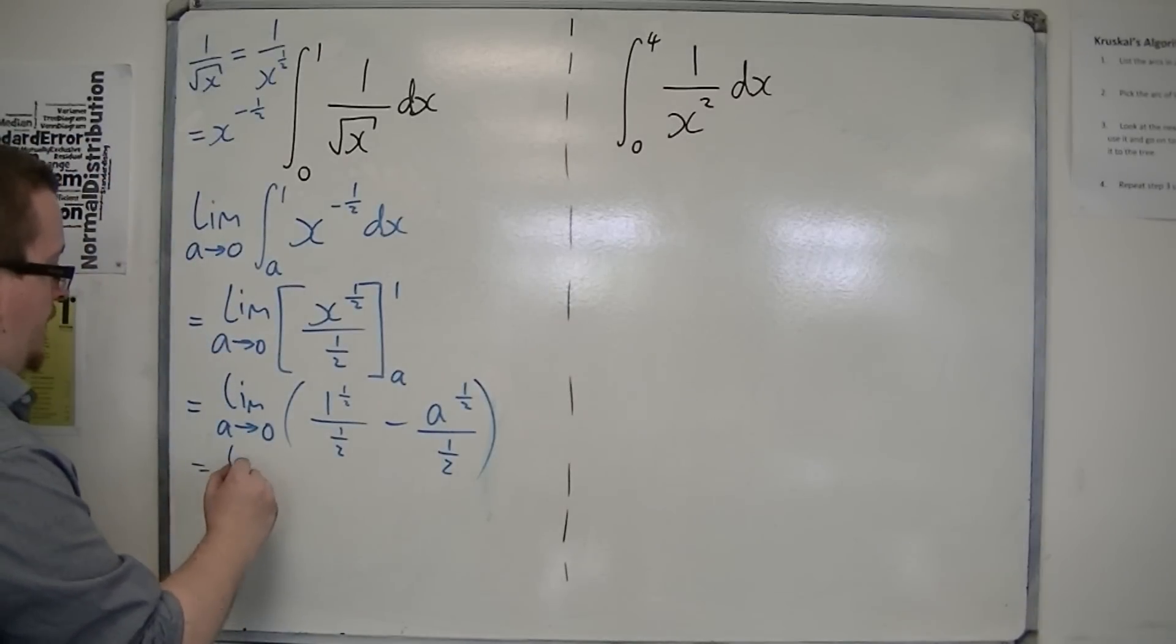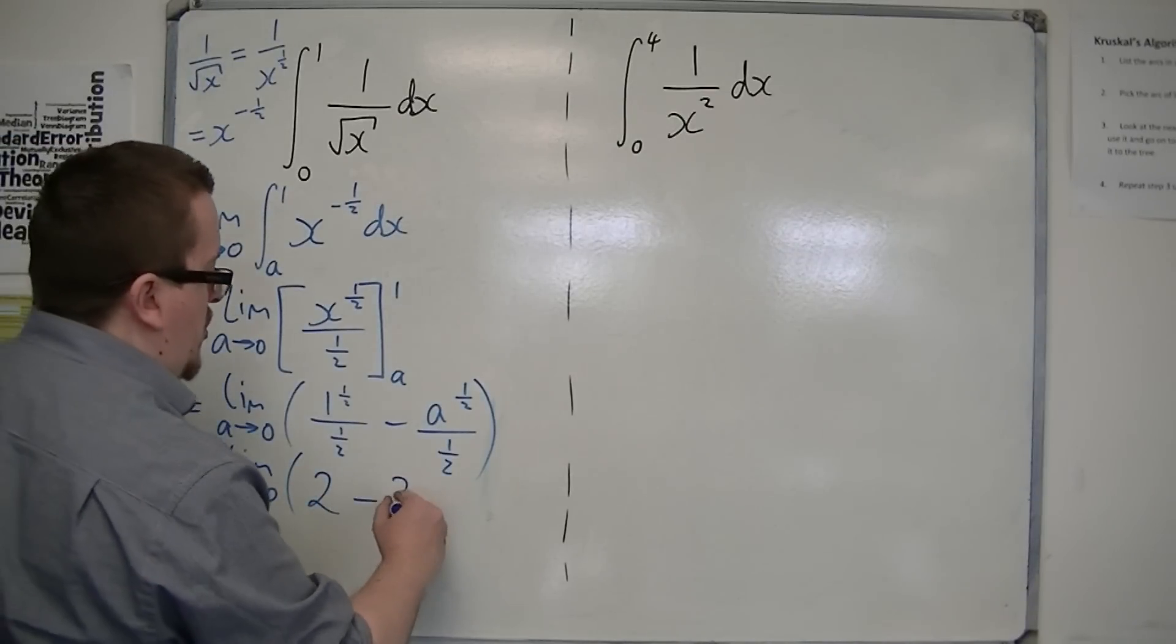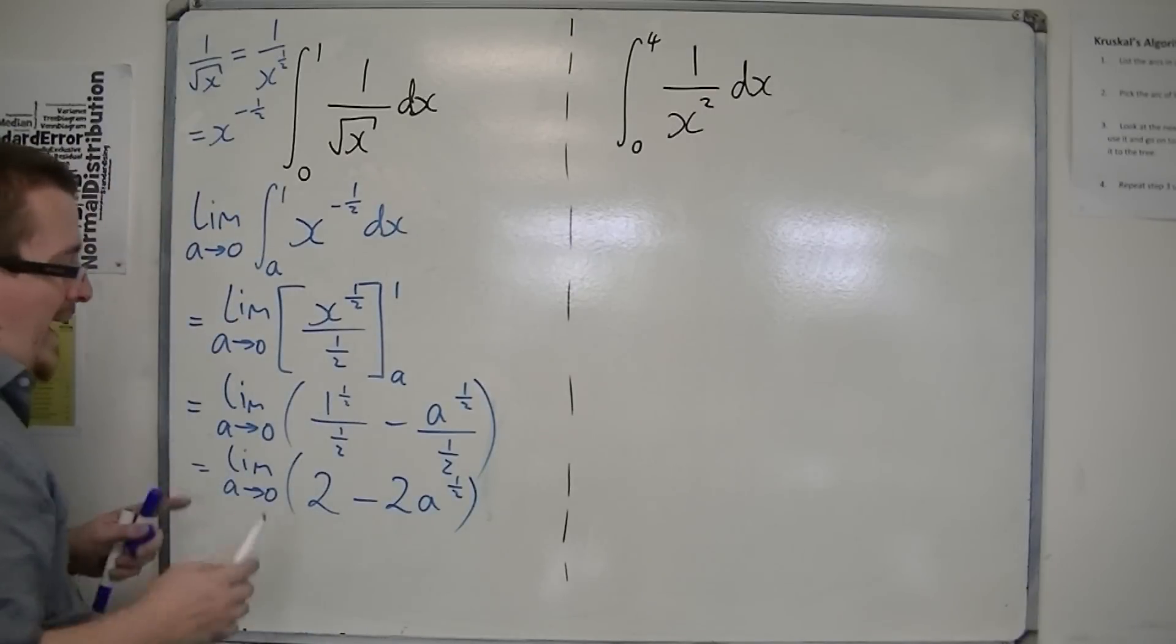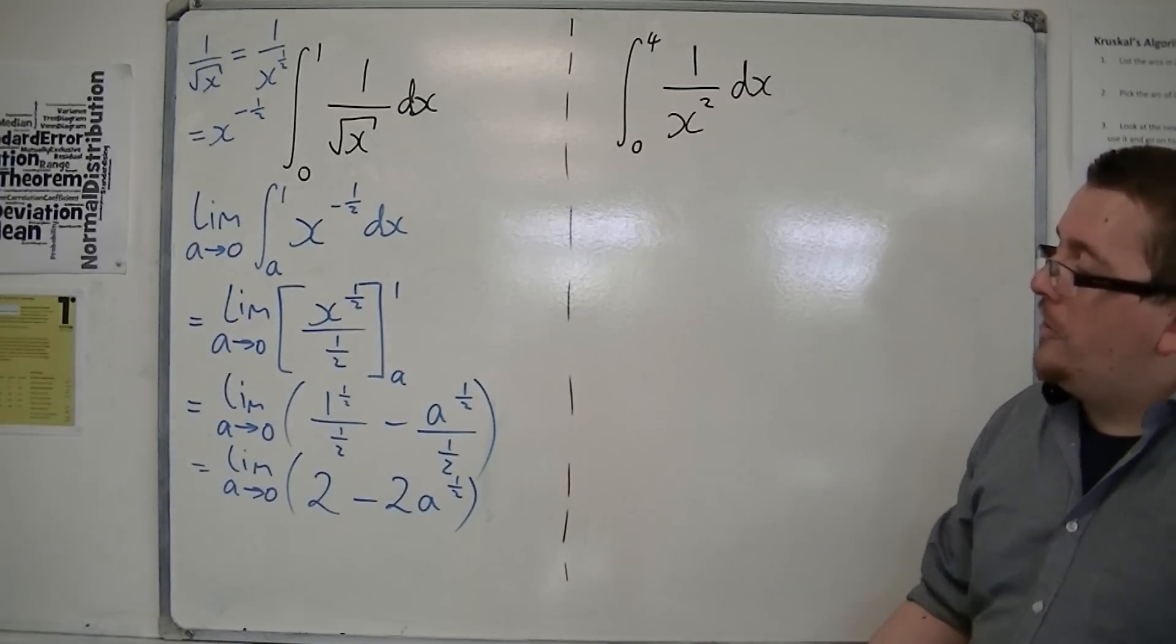So if we tidy this up, we have 1 to the half divided by a half. Well, that's 2. Take away 2a to the half. Now as a tends to 0, a to the half will also tend to 0.